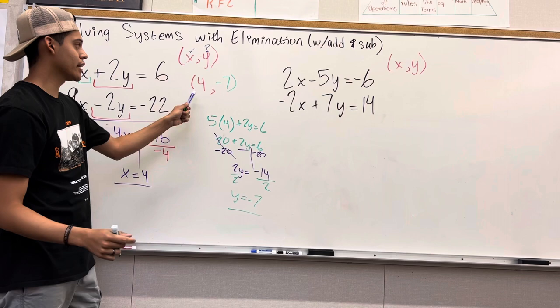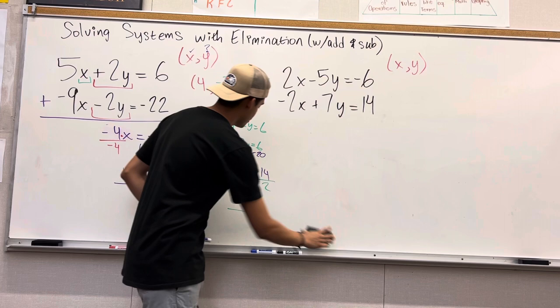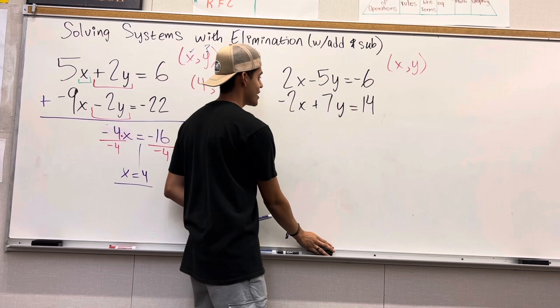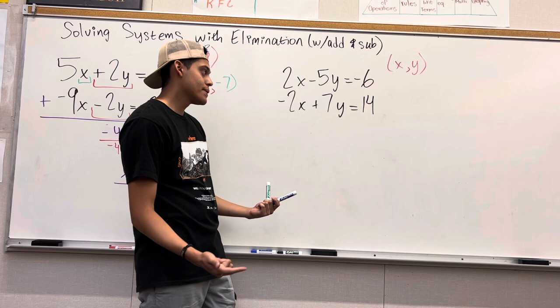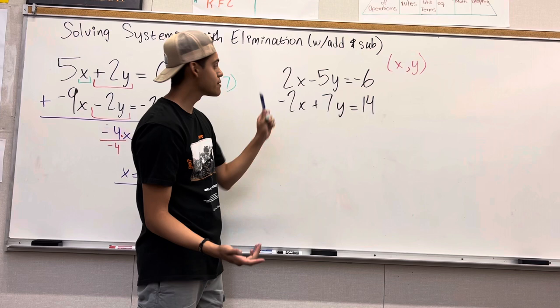Alright. Let's go to the second problem right here. Let me erase this, get it out of the way. We have 2x minus 5y equals negative 6 and negative 2x plus 7y equals 14. Now, I want you guys to look for the opposites. As you can see, this 2x and this negative 2x, they are opposites of each other, different signs, but they both have 2x.